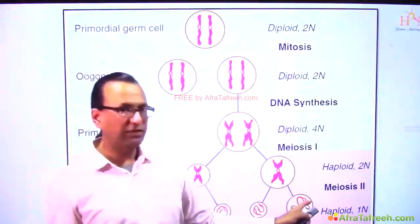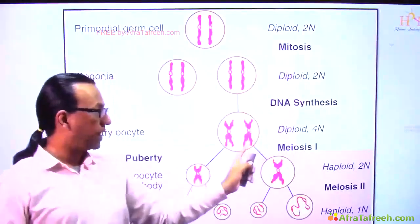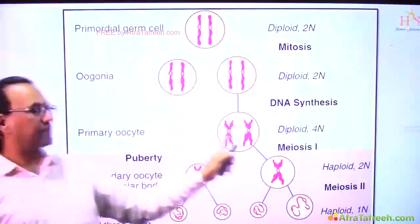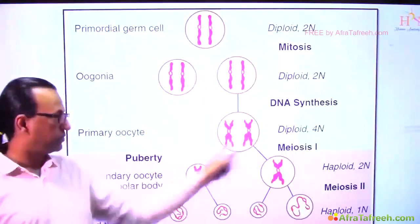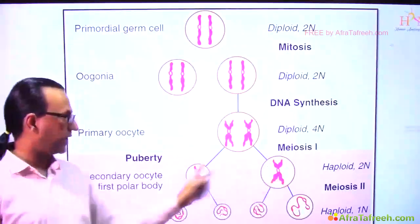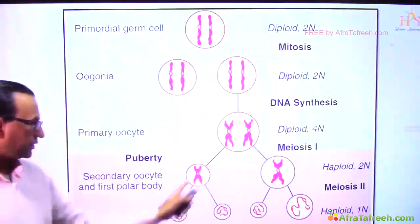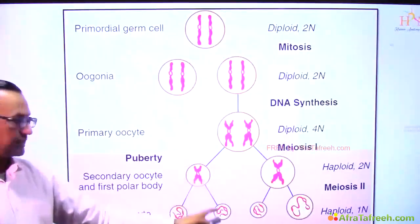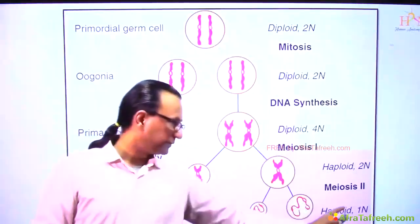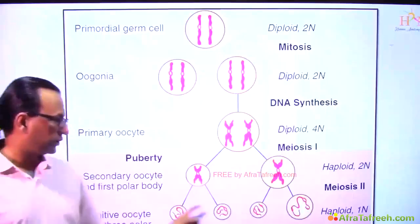The cell which enters meiosis is the primary oocyte. The primary oocyte is the cell which enters meiosis I; it will give us the secondary oocyte, and the secondary oocyte will then enter meiosis II to give us the mature oocyte. Along with the mature oocyte we will also have the polar bodies.